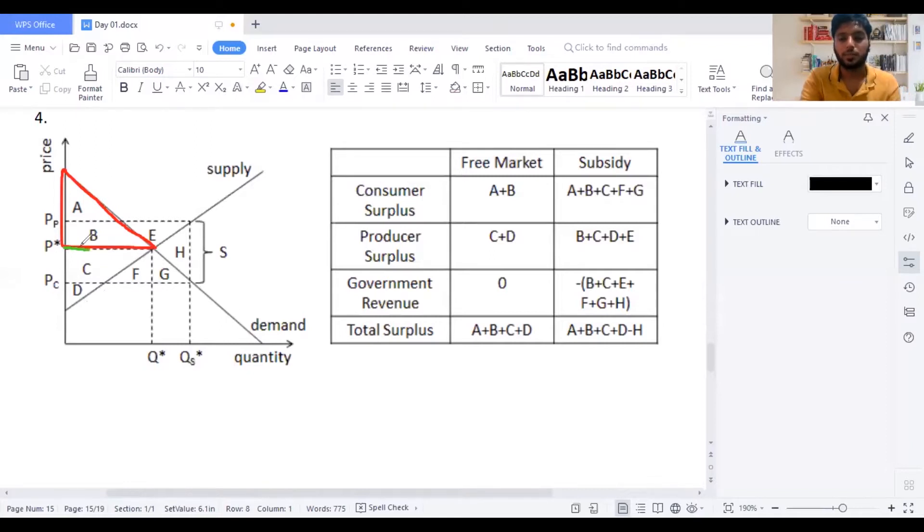Now what is a subsidy? A subsidy is actually a government grant and that will help the producers to give as much as possible. Because government want to reduce the price, if the government reduces the price, of course quantities in the market will be consumed as much as possible.